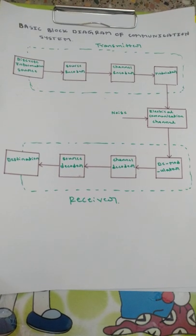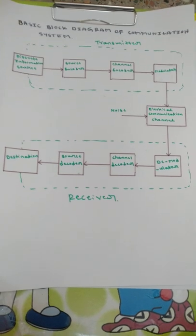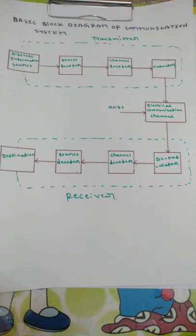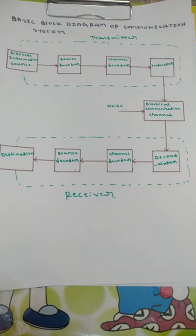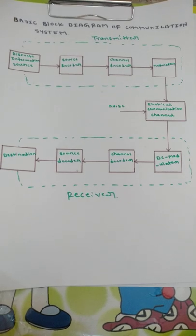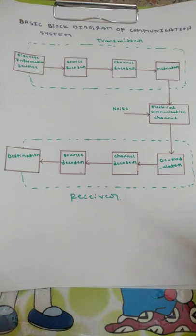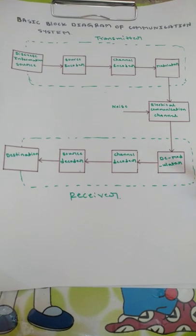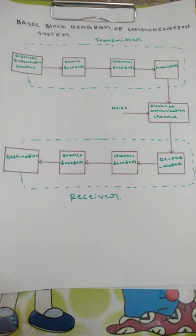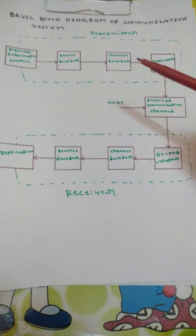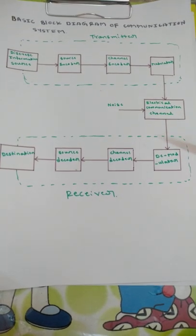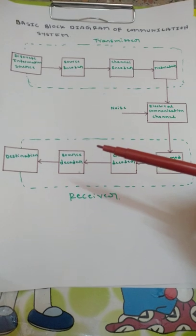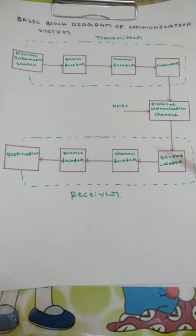Hello everyone, good evening. Today we will see a basic block diagram of a communication system or any communication network. This is only a basic diagram where we will try to know completely and clearly what are the components and their functions — why they are used particularly in this system. The communication system consists of: discrete information source, source encoder, channel encoder, modulator, electrical communication channel, demodulator, channel decoder, source decoder, and destination.